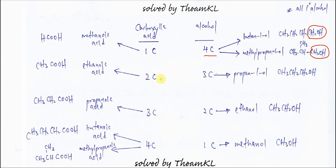Now continuing with the two-carbon carboxylic acid, which is ethanoic acid, reacting with a three-carbon primary alcohol. The only three-carbon primary alcohol is propan-1-ol, since it's the only one with the CH2OH group. So only one alcohol reacts with ethanoic acid, forming one ester.